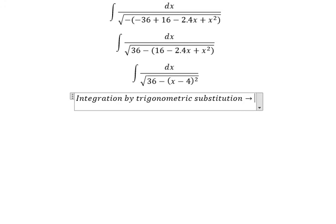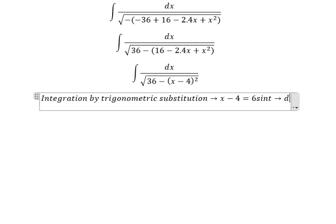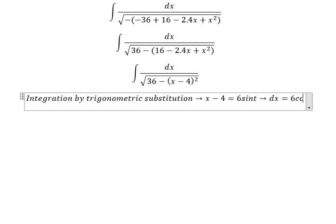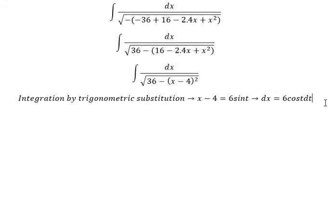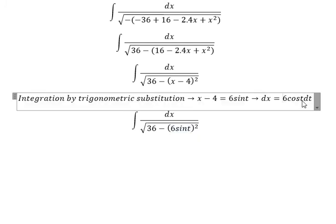So we put x minus 4 equal to 6 sine t, and the dx equal to 6 cos t dt. This one we change to 6 sine t, this one we change to 6 cos t dt.